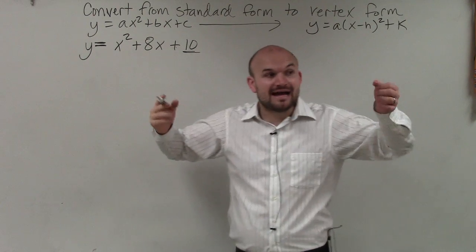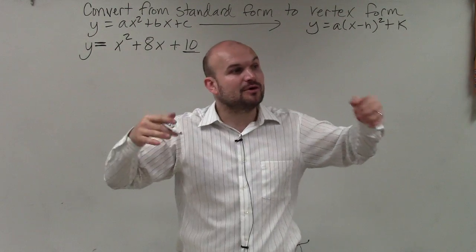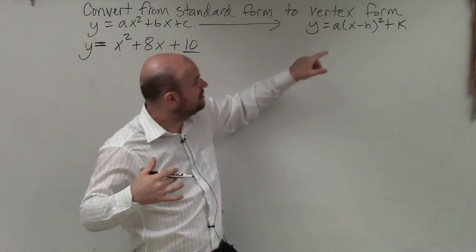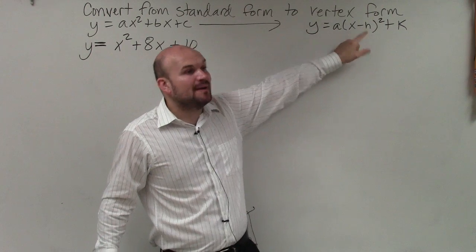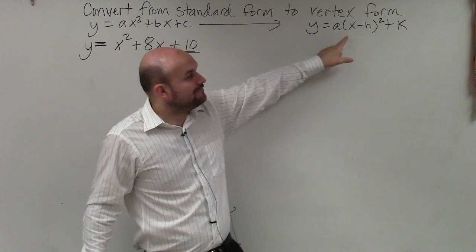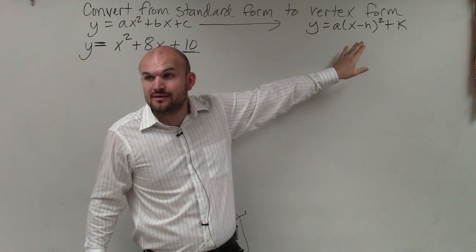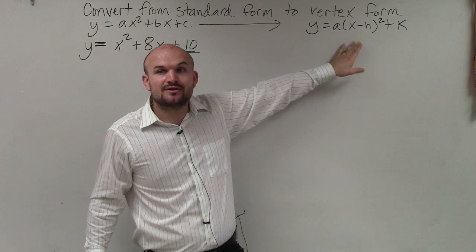But if I am going to rewrite this as a perfect square trinomial, I am going to have to use this as a binomial. This is a binomial squared, which if you were to multiply this out, would create a perfect square trinomial.